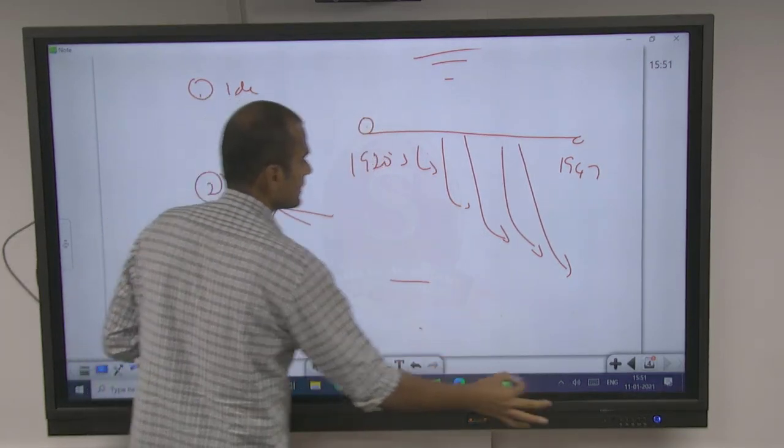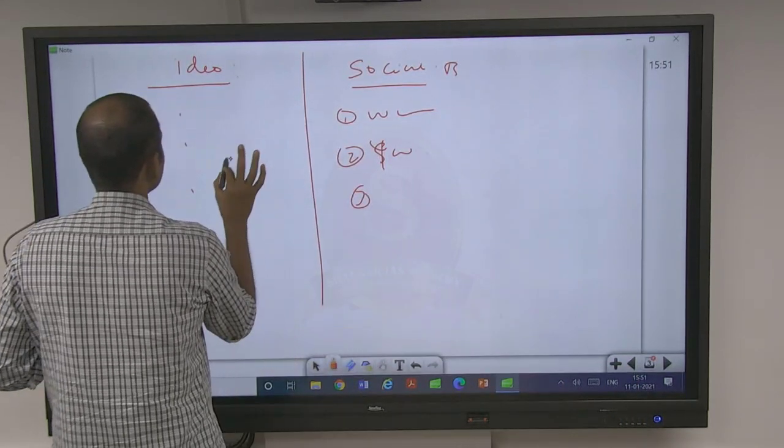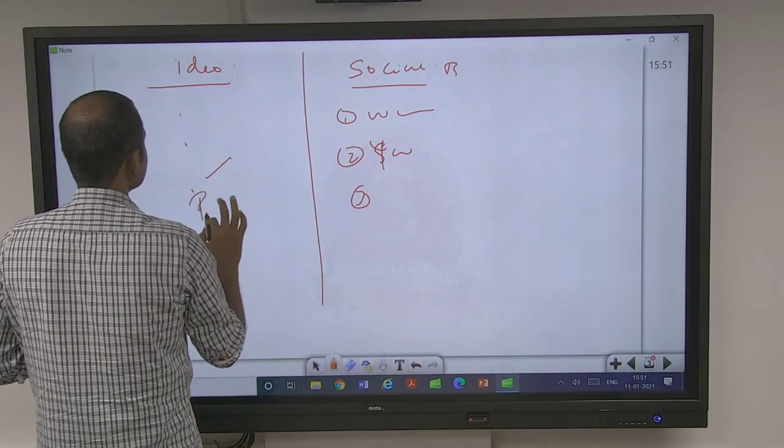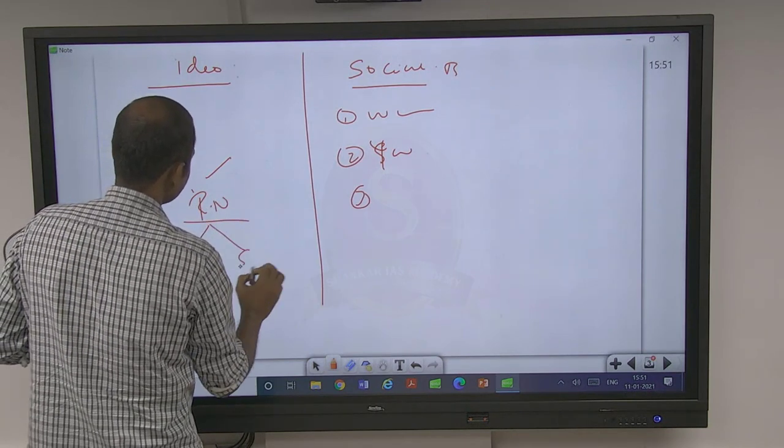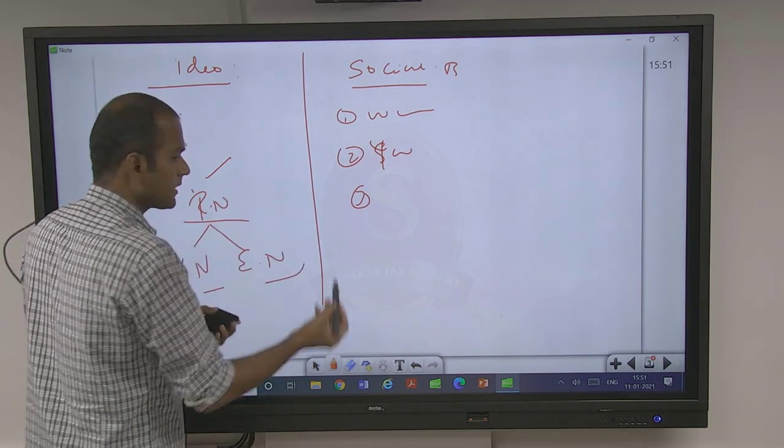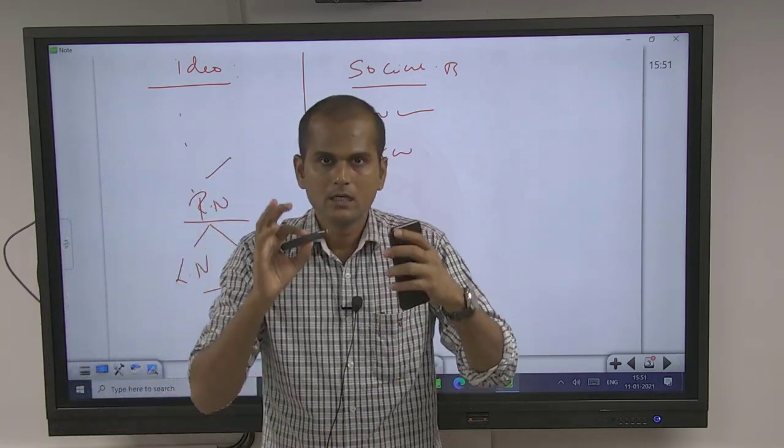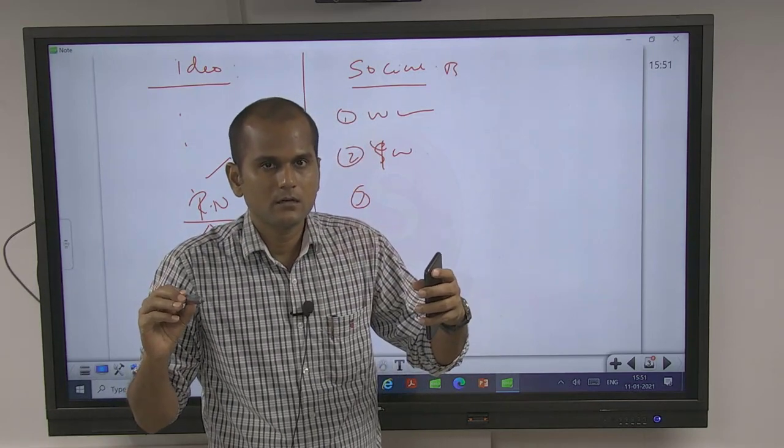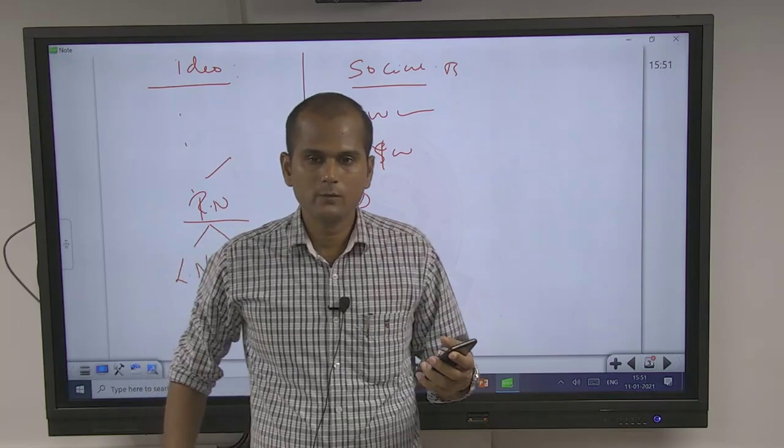Even another one ideology you can add - here is communalism also. Because that communal-based religious nationalism also, both liberal nationalism and extreme nationalism, communal-based nationalism is also one kind of ideology. So general explanation to this question, and you can answer in two ways.